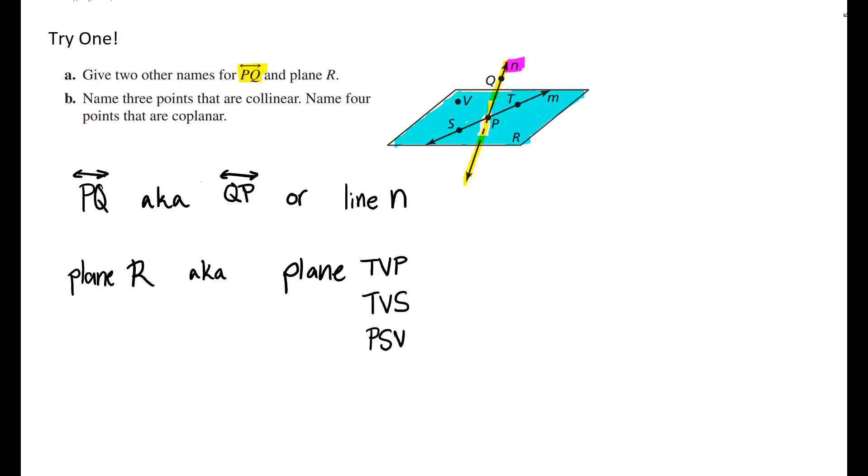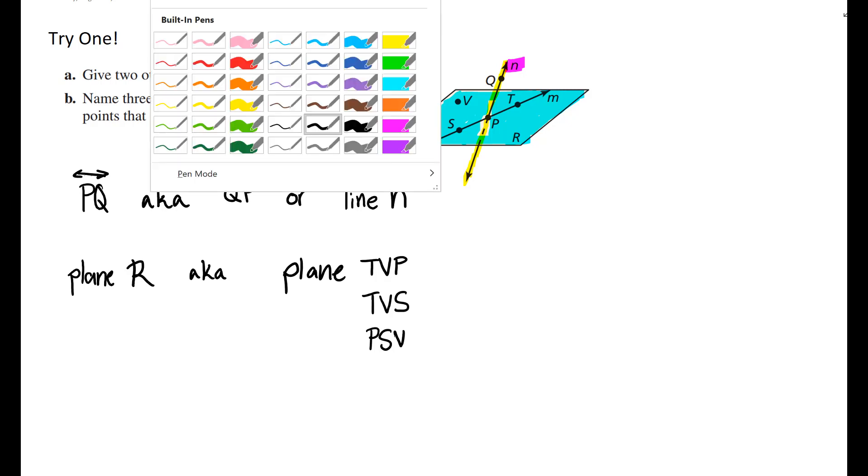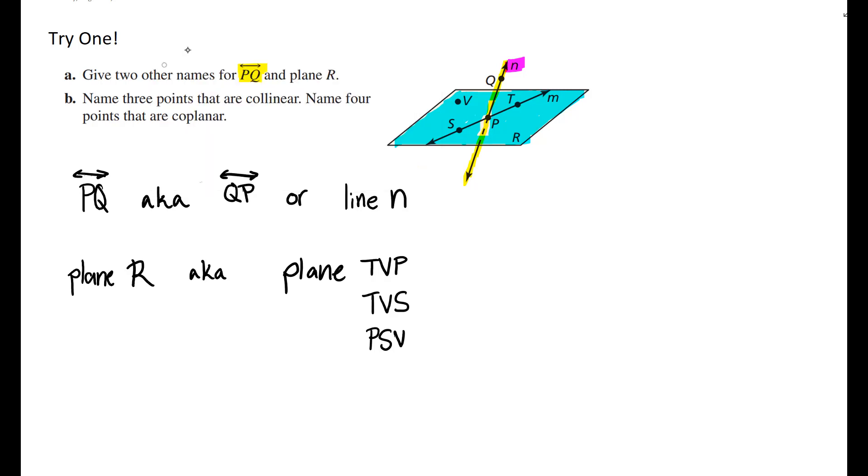There are several different ways that you can call plane R. You just can't use S, P, and T as the three points because they are on the same line. Also, this lowercase m is the label for this line, so that is not a point. And this uppercase R does not have a point next to it, so it's the label for the plane. So we cannot use that letter either as a point.